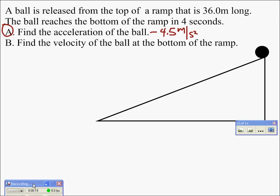Now if you didn't set it up how I did and assign down as being negative and up as being positive, you may have come out with a positive acceleration of 4.5 meters per second squared, which is okay as long as we understand that's going down the ramp. So it doesn't have to necessarily be negative to be correct depending on how you set up the problem.